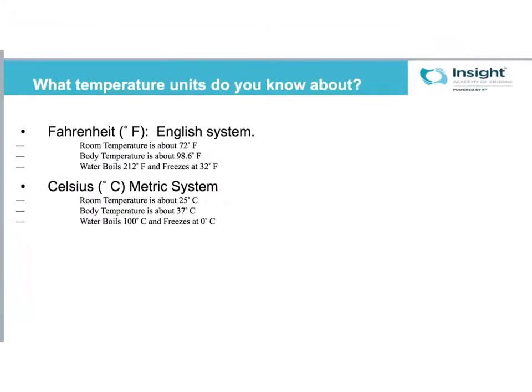First thing is we're going to talk about temperature conversions. You're probably familiar with measuring temperature in Fahrenheit. You probably have heard of Celsius. So Fahrenheit is the English system, Celsius is the metric system. You don't necessarily need these memorized, but just to give you a reference point: room temperature is usually about 72 degrees in Fahrenheit or 25 degrees Celsius. Body temperature is 98.6 in Fahrenheit but it's 37 in Celsius. And then water boils at 212 degrees Fahrenheit and freezes at 32 degrees Fahrenheit, whereas in Celsius it boils at 100 and freezes at zero.